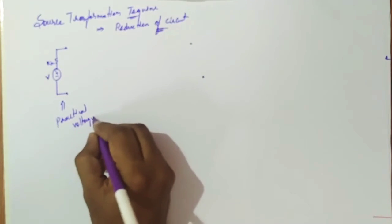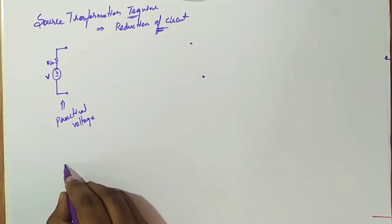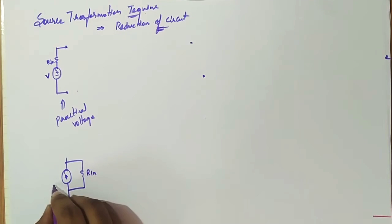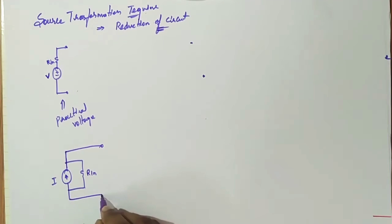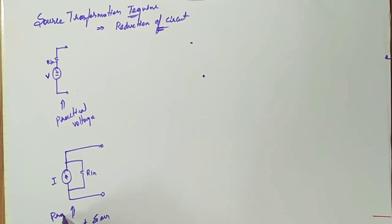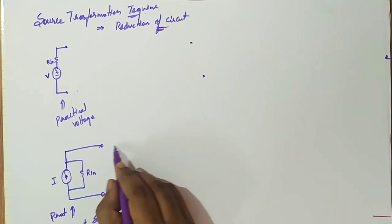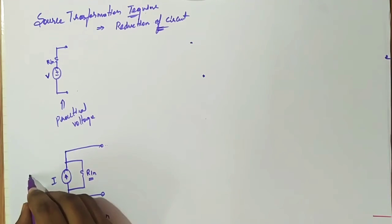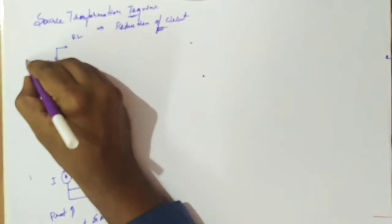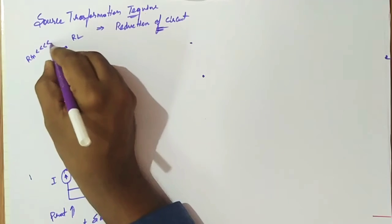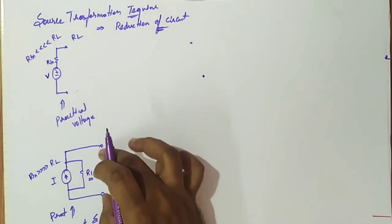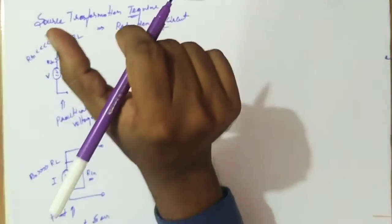We also have another source: the current source. This current source has a parallel resistance — that is R internal — and the source has a value of I. This is a practical current source. There will be a load resistance R_L. For the practical current source, the internal resistance will be comparatively much higher with respect to the load resistance.